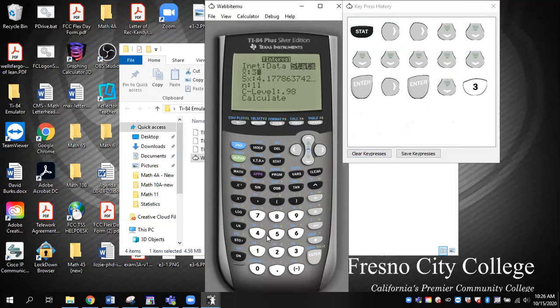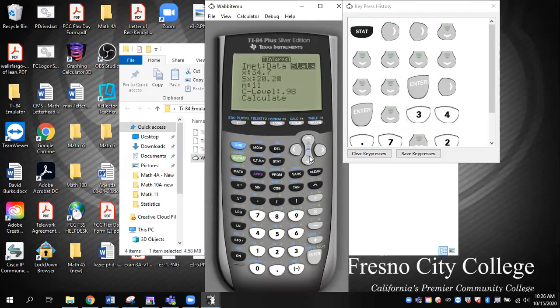Let me go on down. So my X bar is 34.7. My S sub X is 20.2. My N is 20. My confidence level is 0.98 and calculate. There it is. 23.23 to 46.17. It's only given me two decimal because I guess that's all it takes.